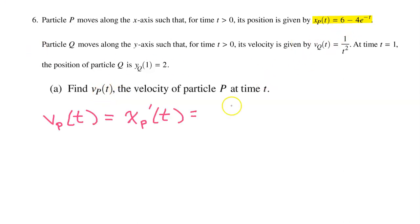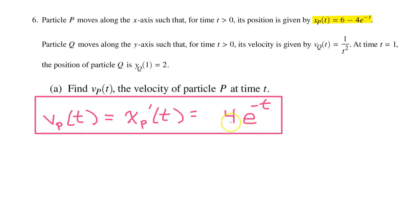The derivative of 6 is 0, so we write nothing. We bring down the negative 4. The derivative of e to the something is e to the something. However, the chain rule demands that we multiply by the derivative of this inner function, which is negative 1. That negative 1 will cancel out this negative, so we have positive 4 e to the negative t power. Make sure you record your answer like this: write vp of t equals xp prime of t, which equals 4 e to the negative t power. You must write vp of t because that's what they were asking us to find, but you must write xp prime of t because that connects us back to the position function, which is what we were given.